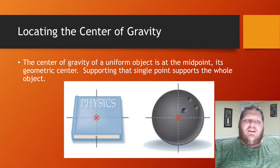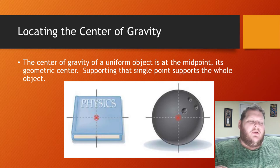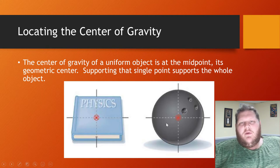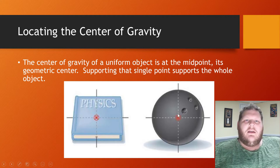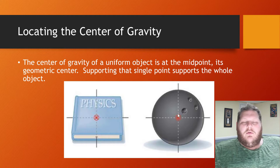If you have a uniform object — a regular shape like a prism, a sphere, or a bowling ball — the midpoint, which is the geometric center, is where that center of gravity is. It's that single point where you could balance the object. When we don't have a uniform object, locating the center of gravity depends on how the mass is distributed.